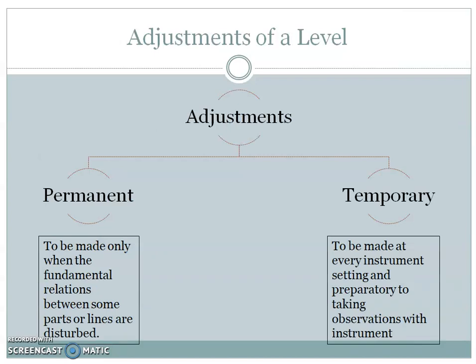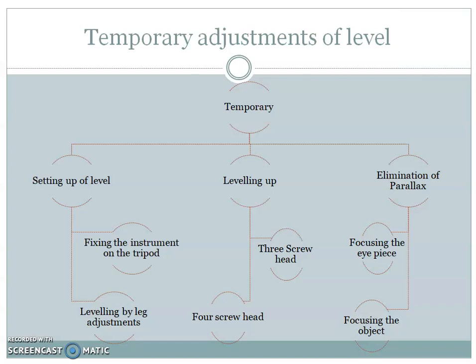Adjustments of the level are of two types: permanent adjustments and temporary adjustments. Permanent adjustments are made only when the fundamental relations between parts or lines are disturbed — these are done during calibration or if the instrument is damaged; we are not supposed to open the instrument ourselves. Temporary adjustments are made at every instrument setting, preparatory to taking observations. There are three steps: first, setting up of the level; second, leveling up; and third, elimination of parallax.